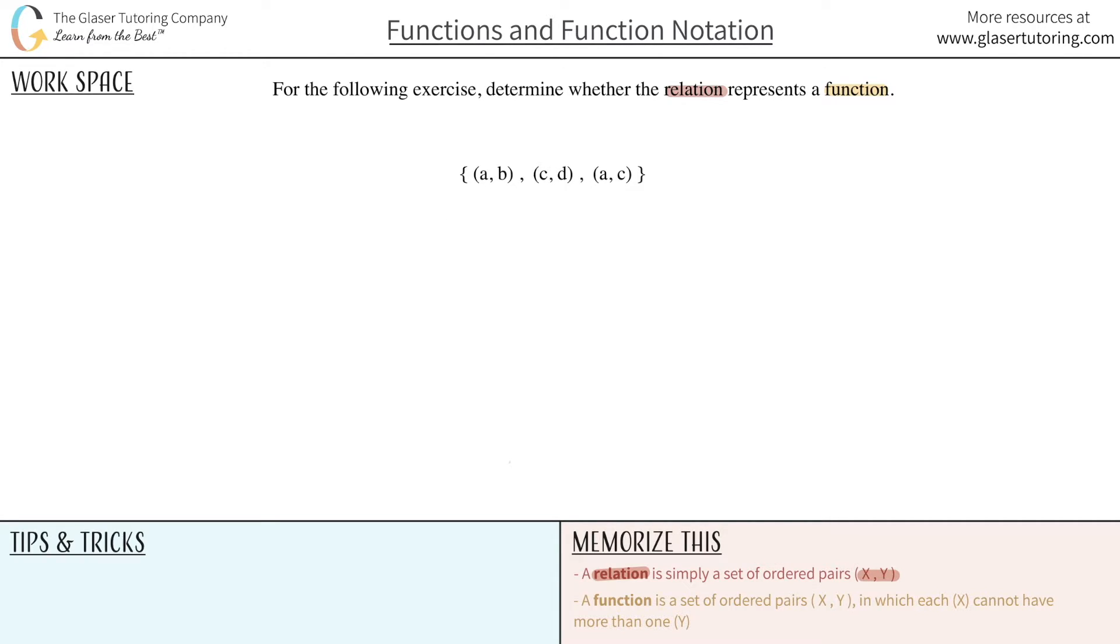A function further qualifies what a relation is, meaning that there's an extra condition to become a function. So it says a function is a set of ordered pairs x, y. So basically, a function is a relation in which each x cannot have more than one y.